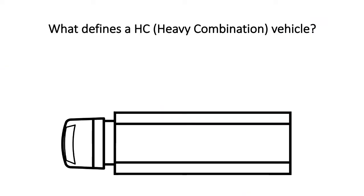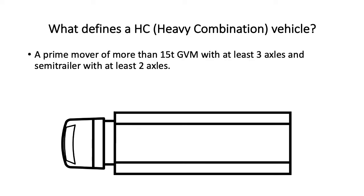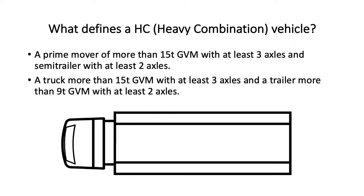What defines an HC heavy combination vehicle? A prime mover of more than 15 ton GVM with at least 3 axles and a semi-trailer with at least 2 axles. Or a truck more than 15 ton GVM with at least 3 axles and a trailer more than 9 ton GVM with at least 2 axles.